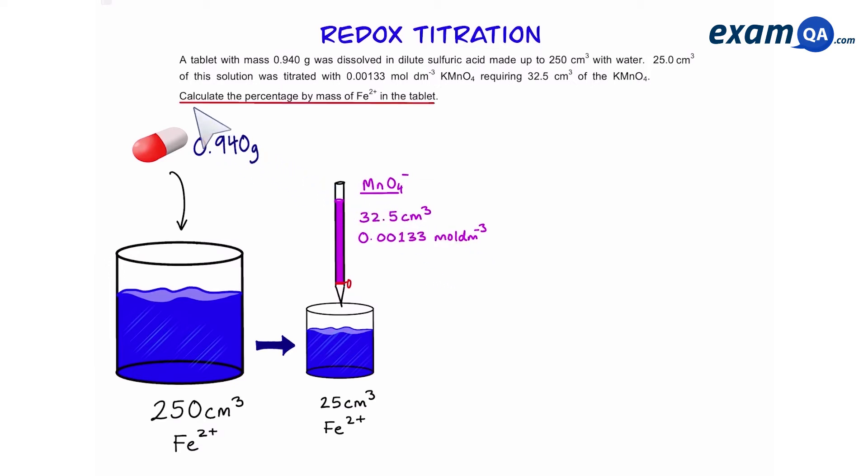The question says calculate the percentage by mass of iron in the tablet. That means that this 0.94 grams is not all iron 2+. So what is the mass of iron in the tablet?